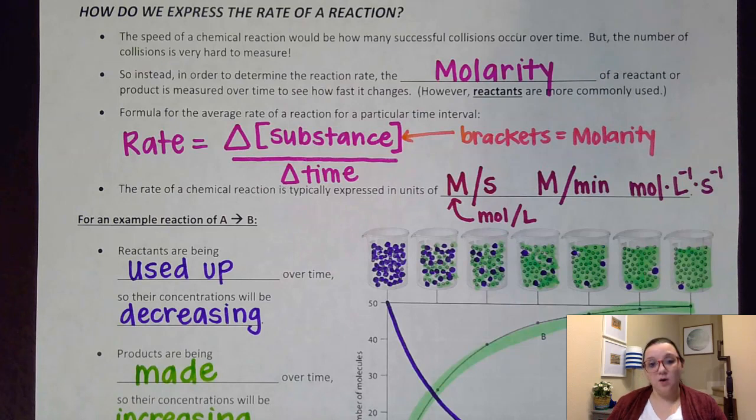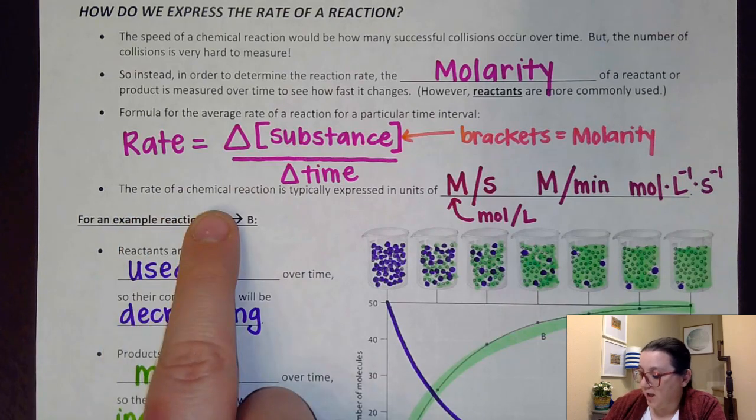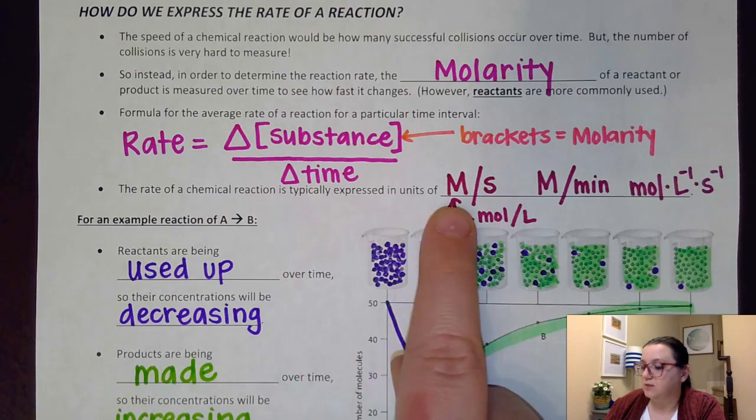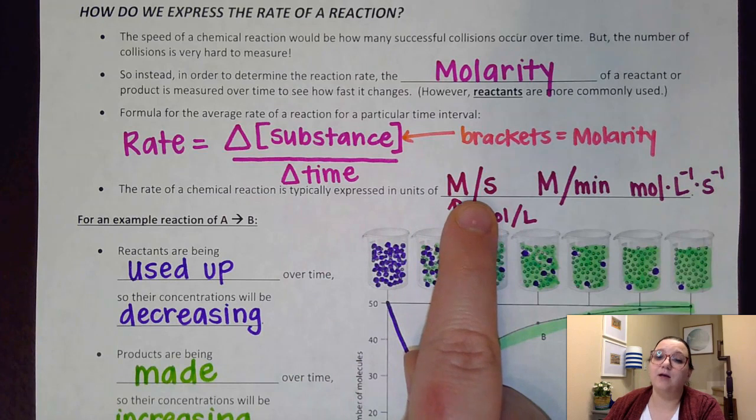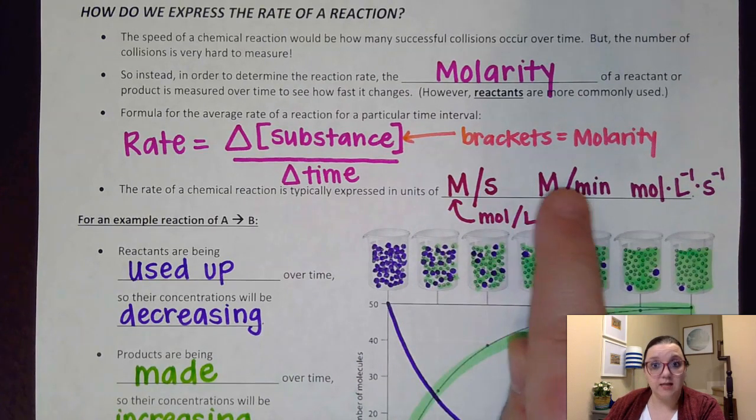Now depending on what you use would depend on then on what unit you would report. So the rate of a chemical reaction is typically expressed in units of molarity per second. This is by far the most common one. But you could do molarity per minute. That's acceptable too.